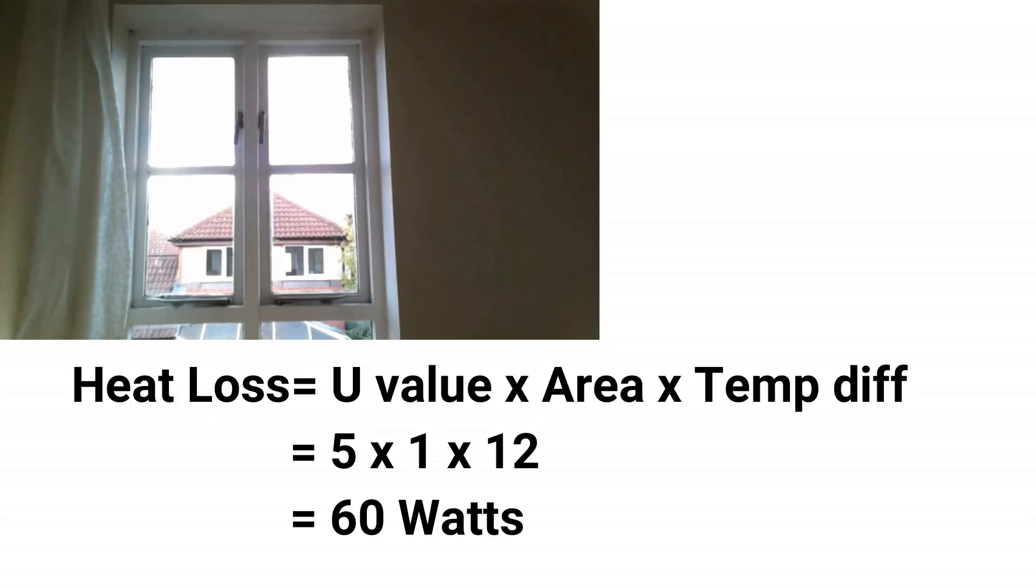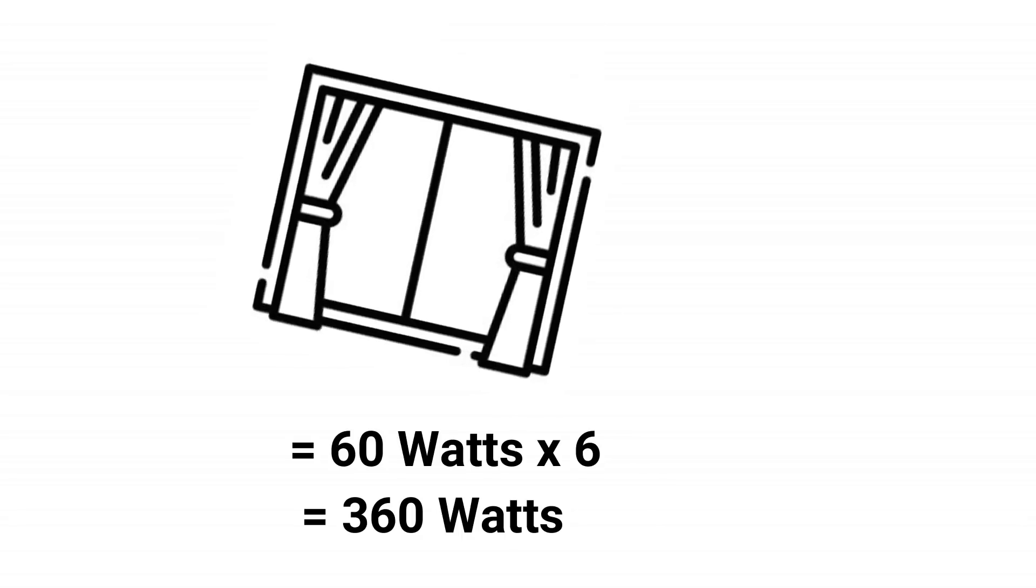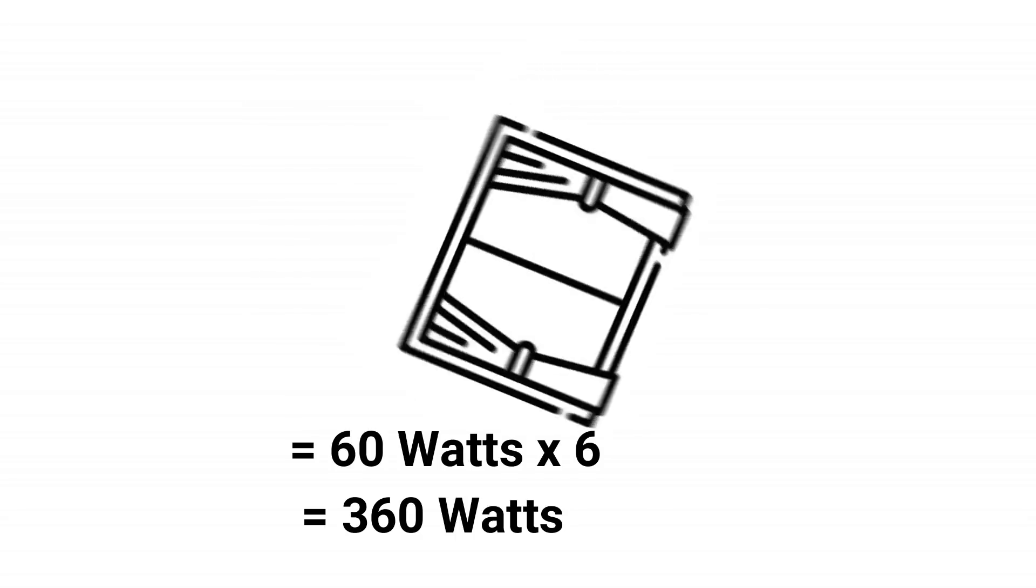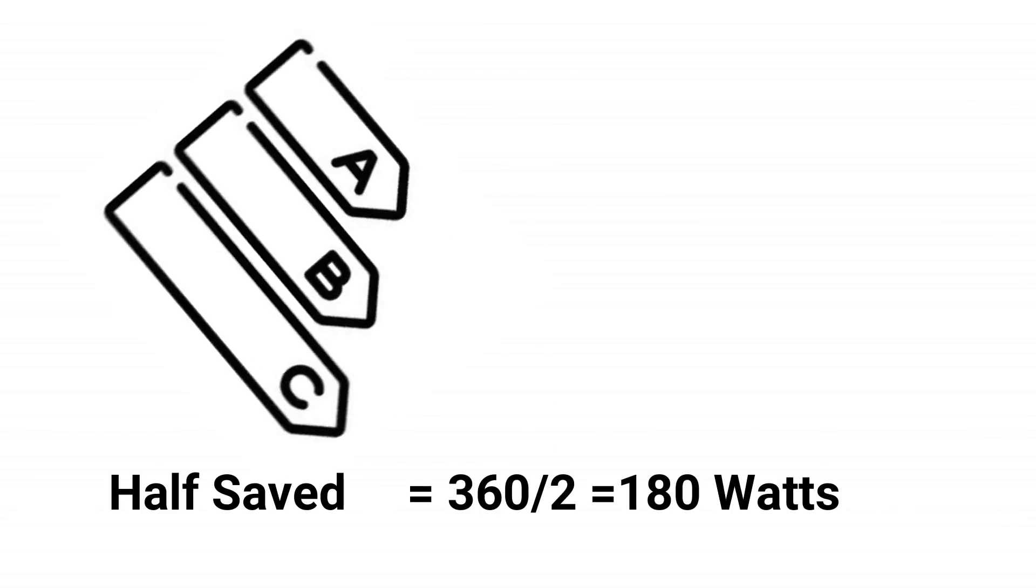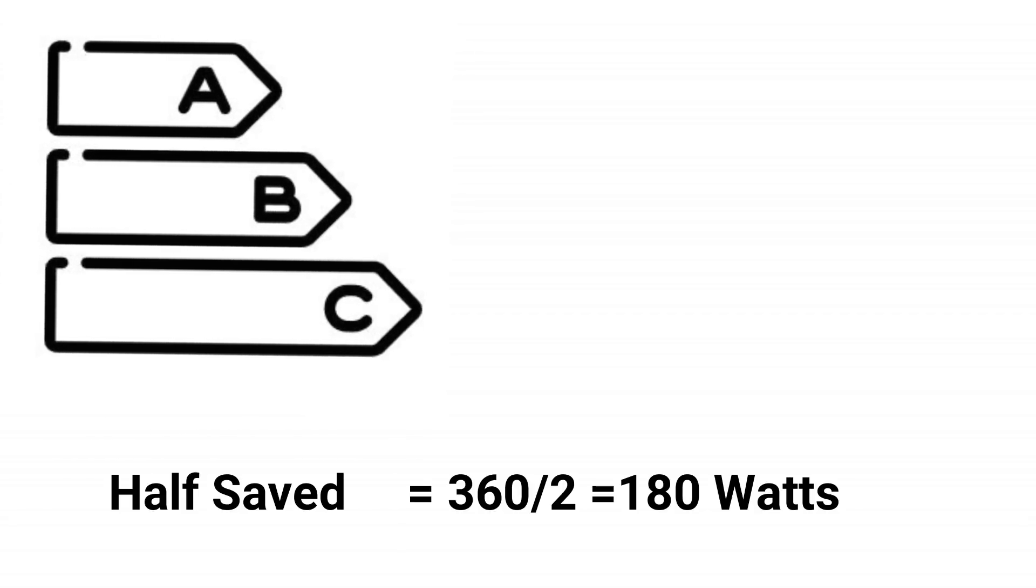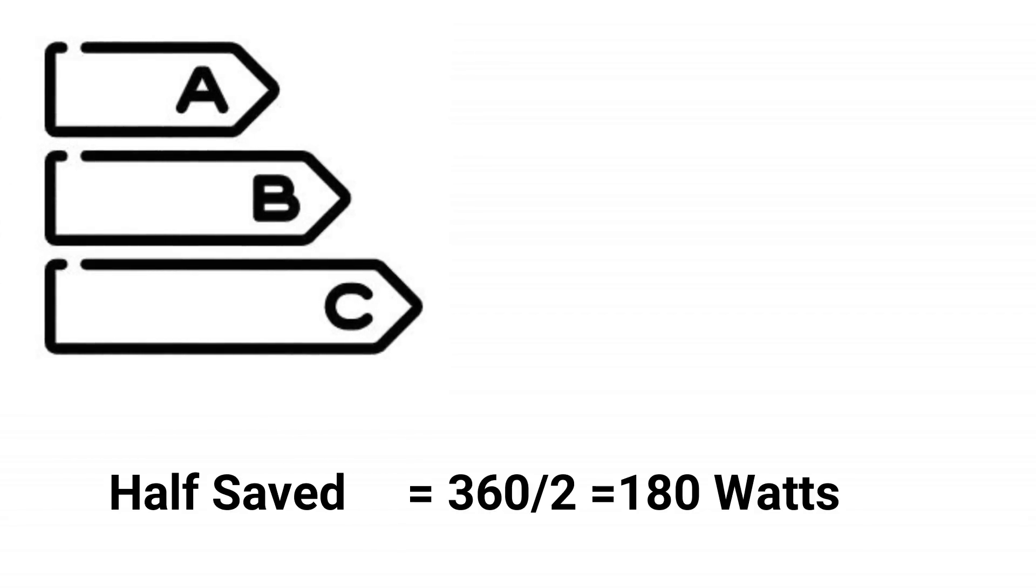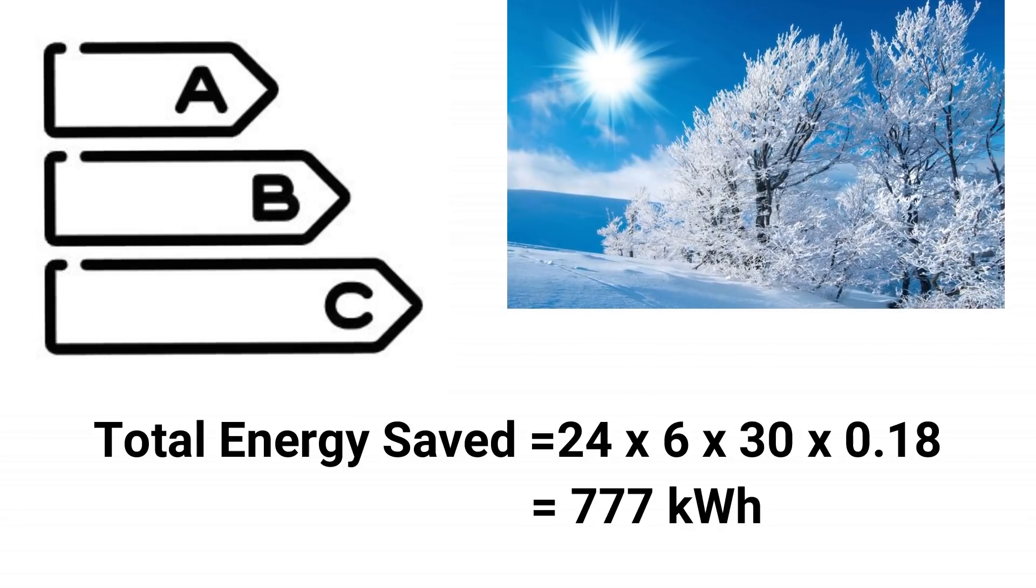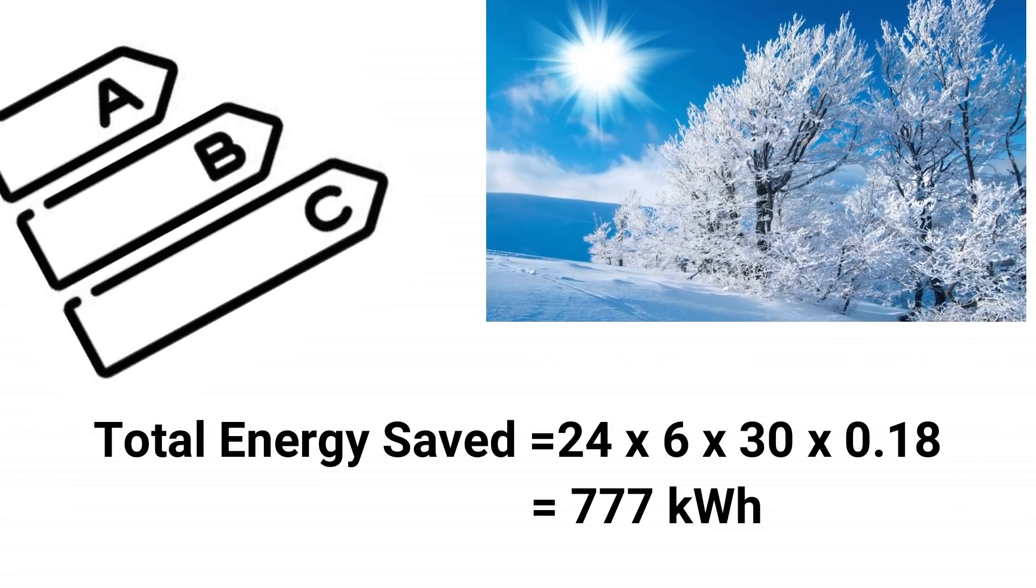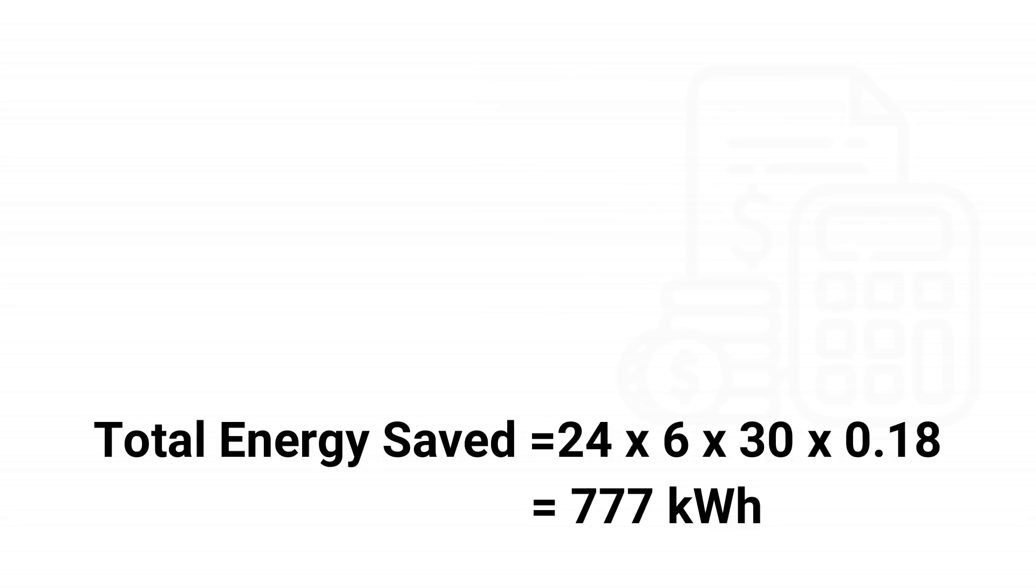Now I have 6 such windows in my house, which makes it 360 watts of heat loss through the windows alone. Now let's assume if I am saving half of my previous energy loss, that is 180 watts through this technique of glazing. Then in the cold season from November to April, I would be saving around 24 times 30 times 6 times 0.18, which would equal to 777 units of heat.